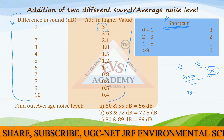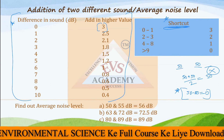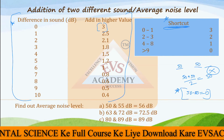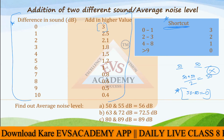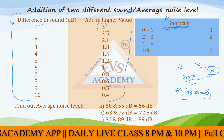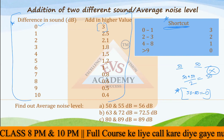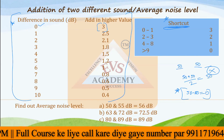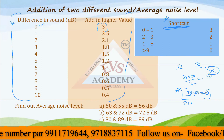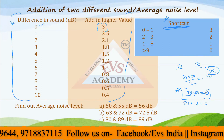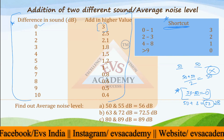You must find the difference between the sound levels. This difference tells you what to add for the average noise level. If the difference between the two sound levels is zero decibels, you add three to the higher value. Both values are equal here at 50 decibels, so the new noise level would be 50 plus 3, which equals 53 decibels. That is how you solve average noise level problems.